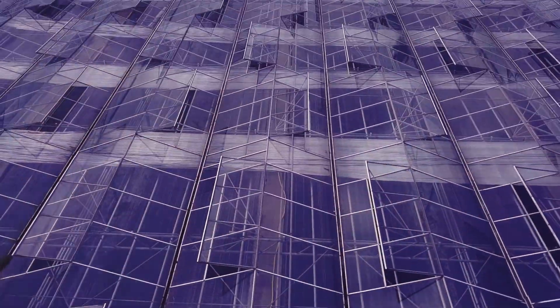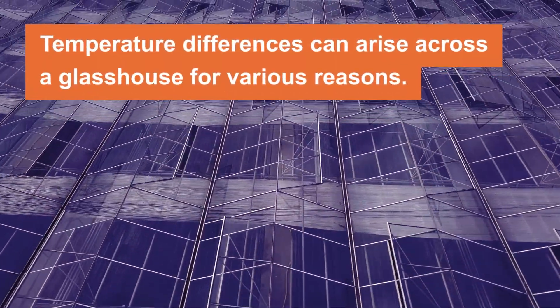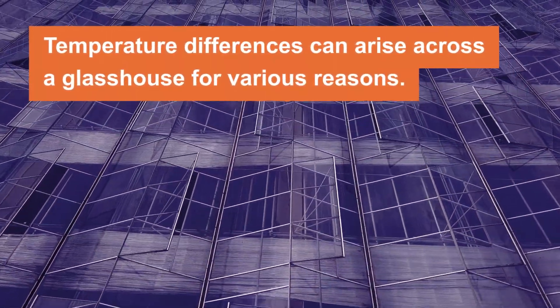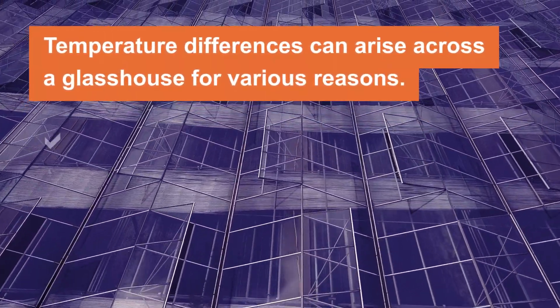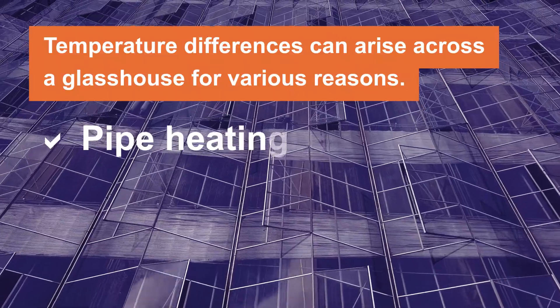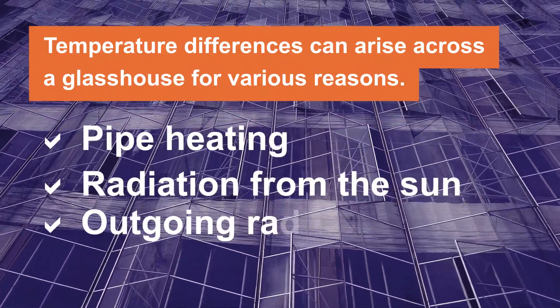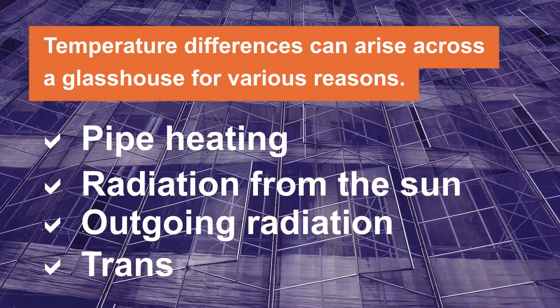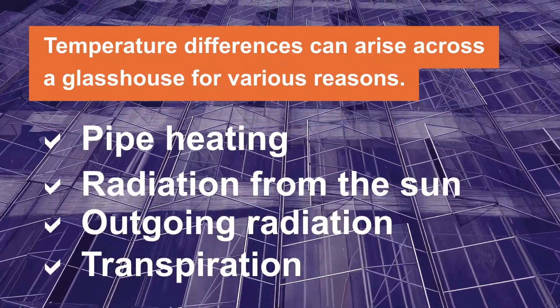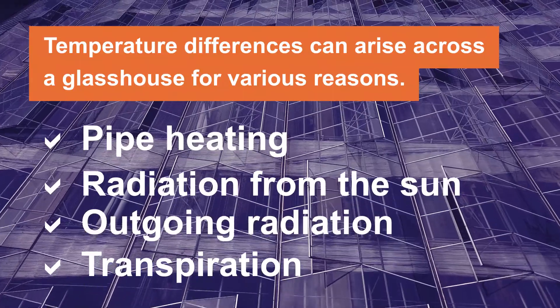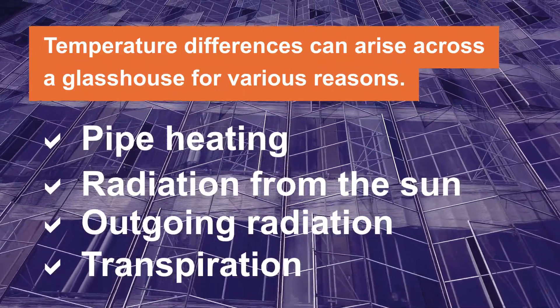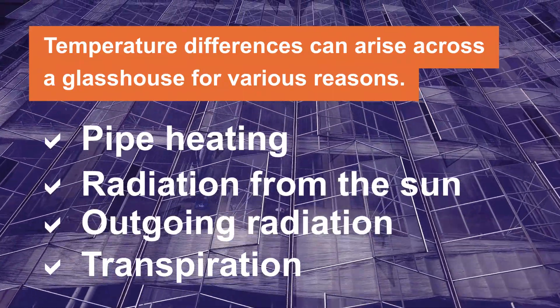There are various reasons for temperature differences to arise in a glasshouse, such as pipe heating, incoming radiation from the sun, outgoing radiation — i.e. heat loss from the glasshouse — or transpiration from the crop.